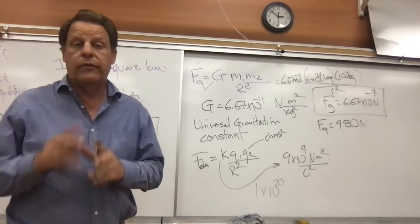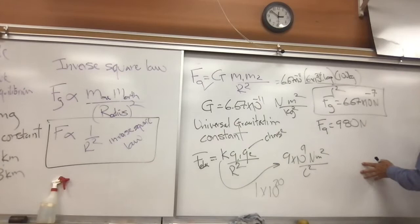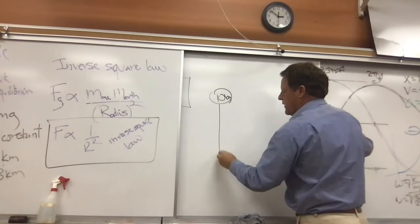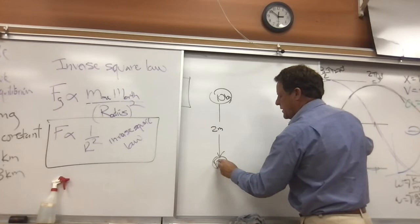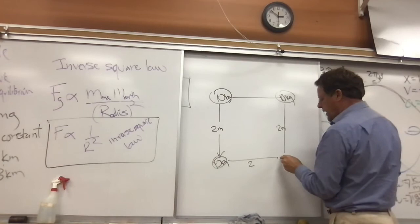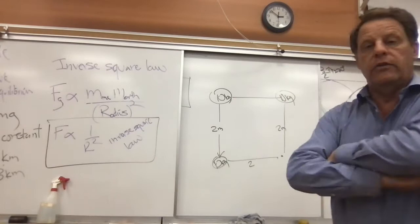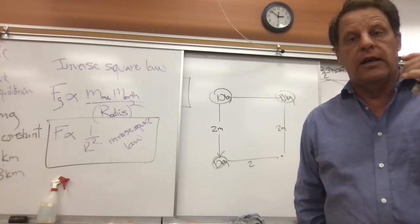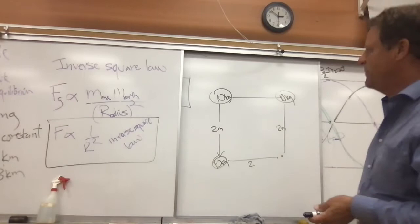What if we have three masses? Say we have a 10 kg object, and two meters away another 10 kg object, and then two more meters over another 10 kg object forming a square pattern, with an empty spot at the fourth corner. There's no mass there, but there is an acceleration due to gravity at that point we can calculate.